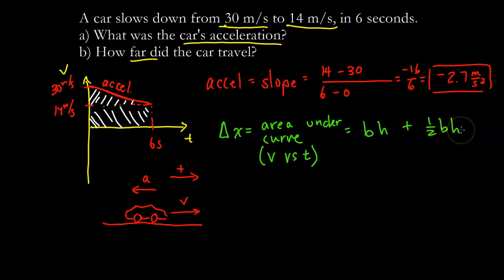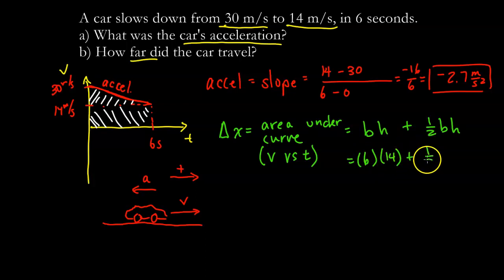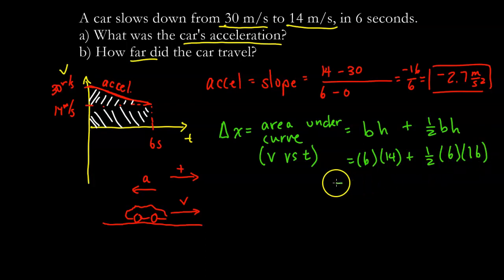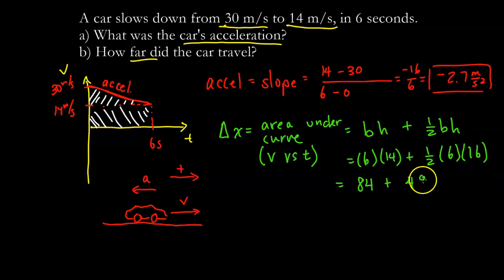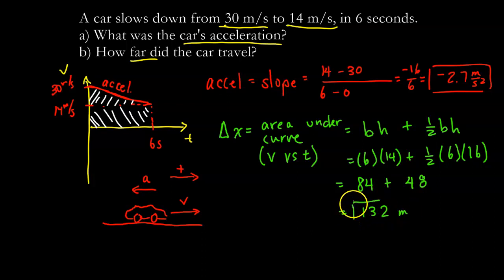For the rectangle: base is 6 seconds, height is 14, giving 84. For the triangle: base is 6 seconds, height is 16 (from 14 to 30), giving one half times 6 times 16 equals 48. Adding them together: 84 plus 48 equals 132 meters. That's how far the car traveled while slowing down over 6 seconds.